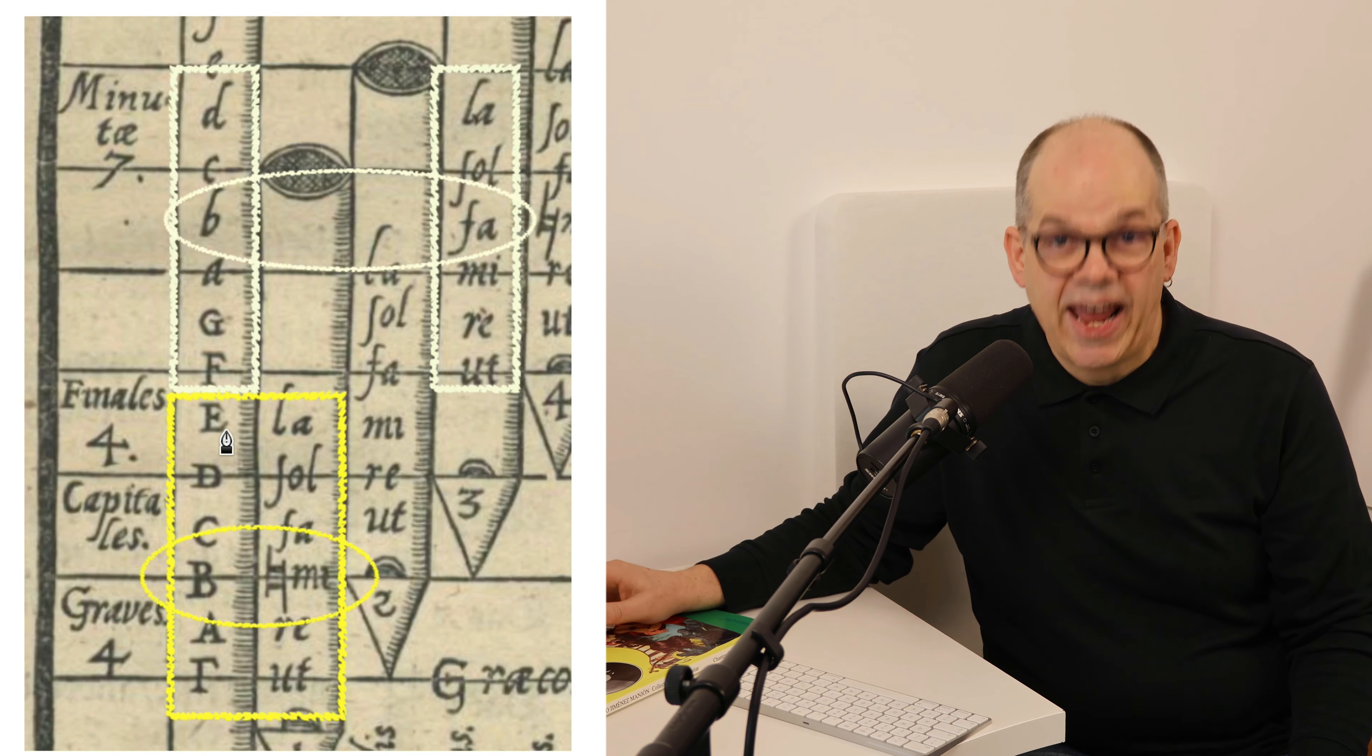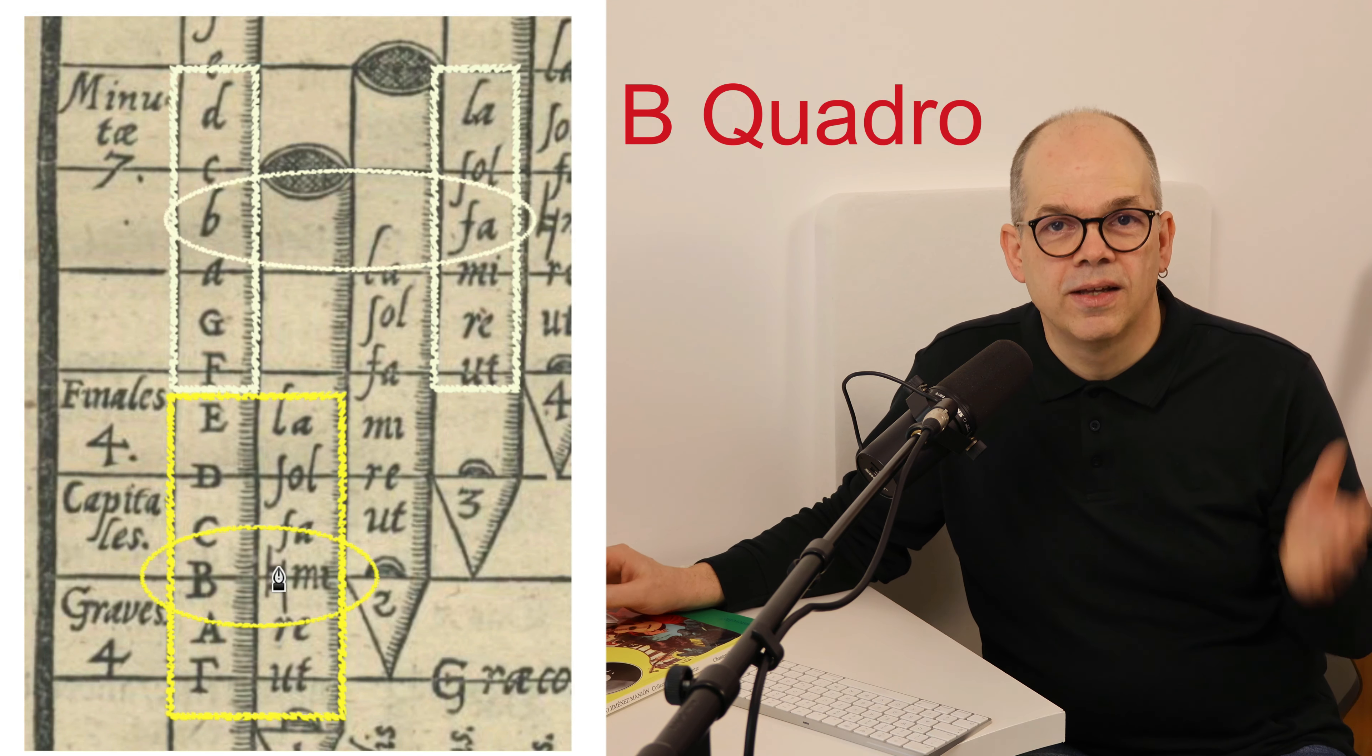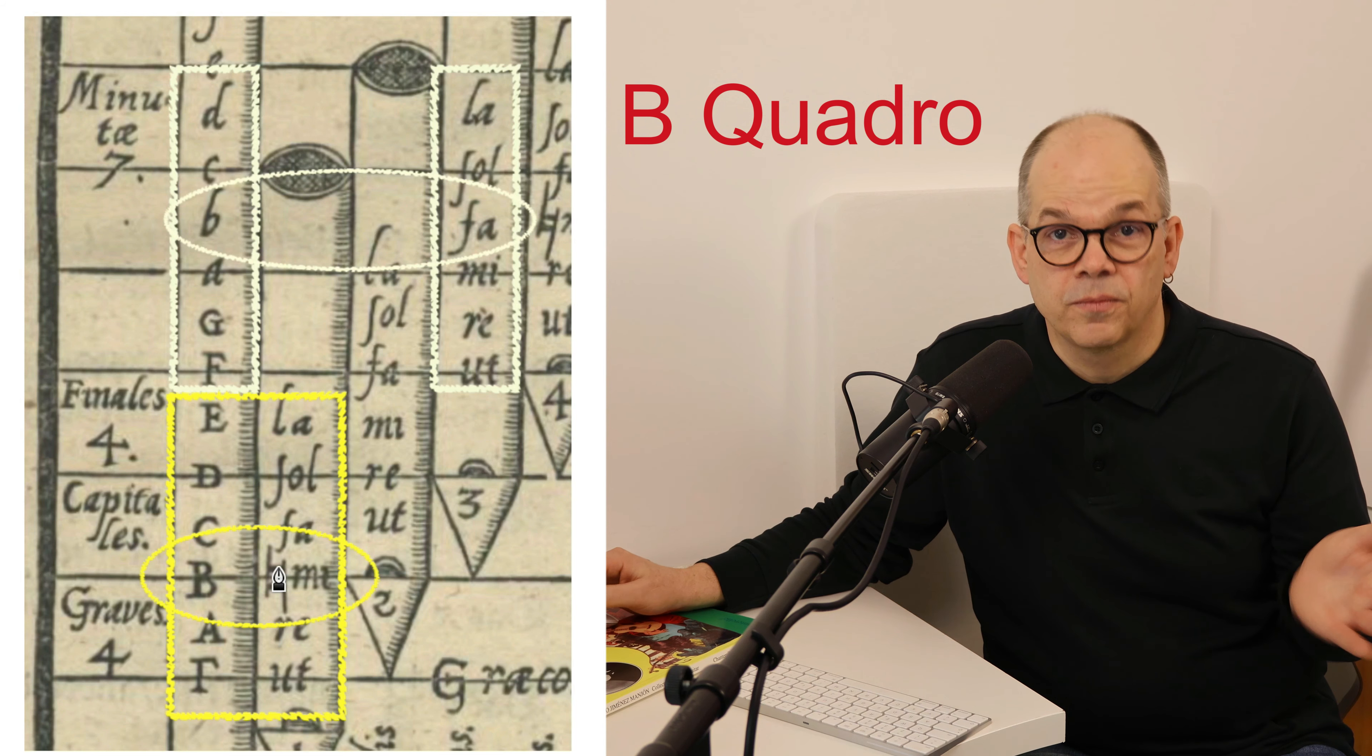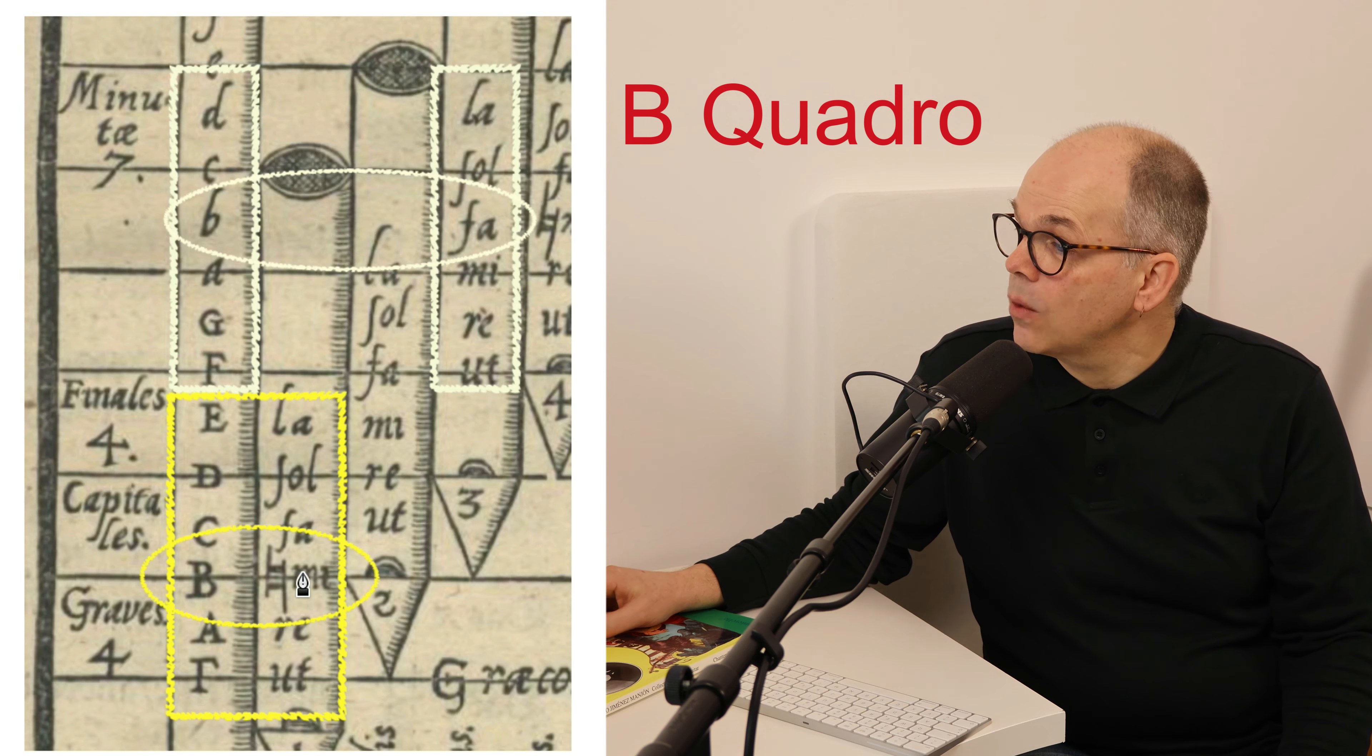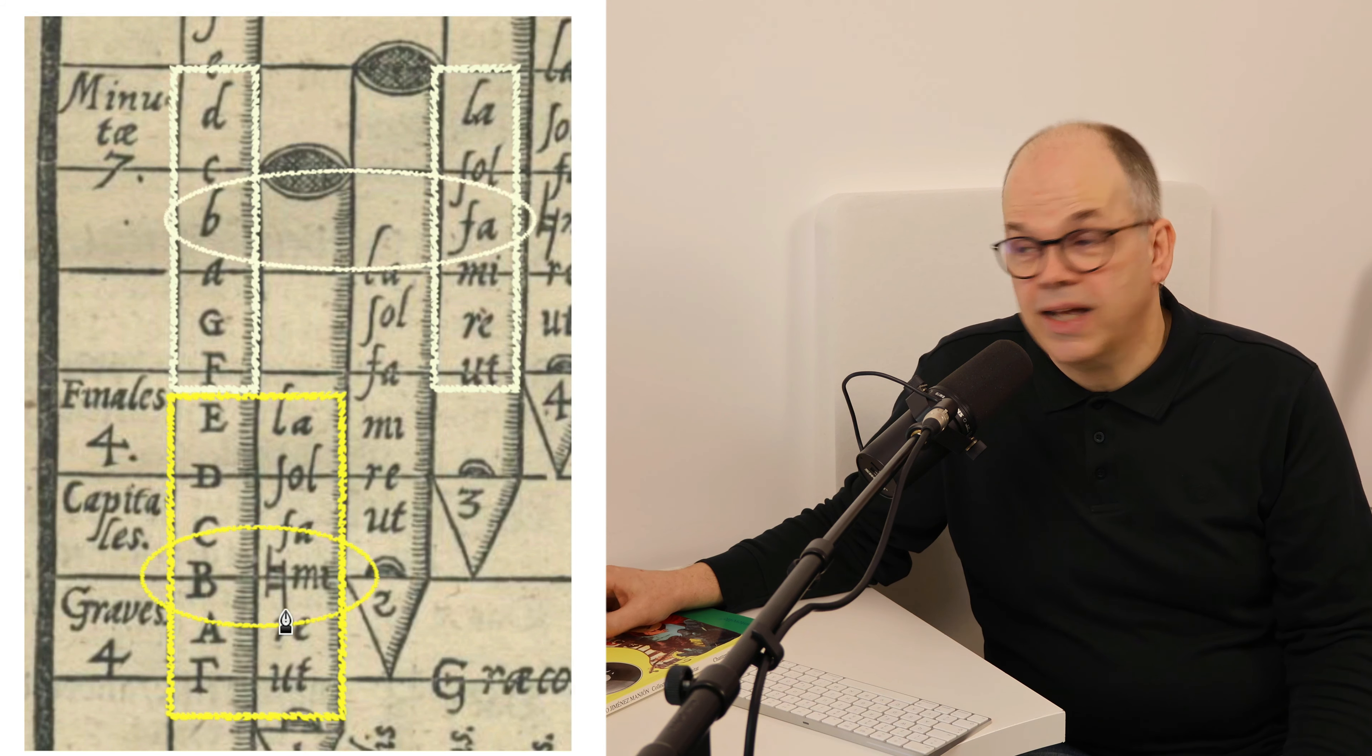This is the hexachord on G, which is the G major scale without the seventh grade. And we have the B written as a capital B. And on the side you see the natural sign. This is the sign for the B quadro, the square B, so to say, which differs just from a B with angles actually by this little stem that we have under the right side of the letter.